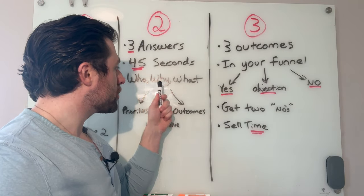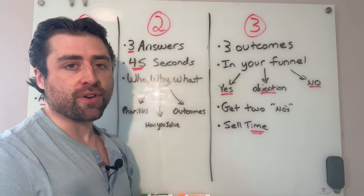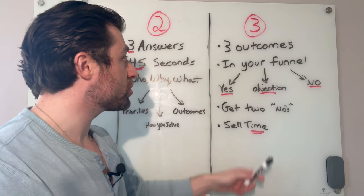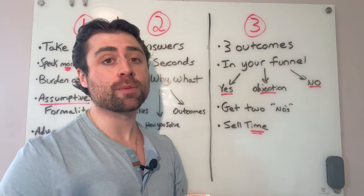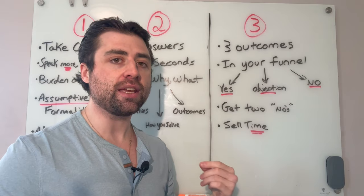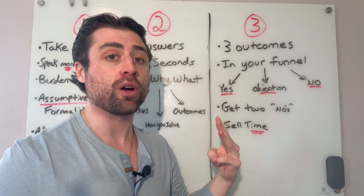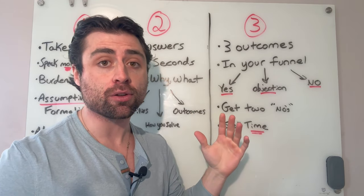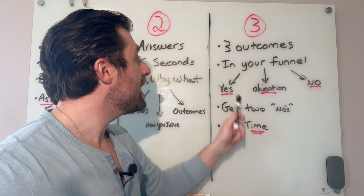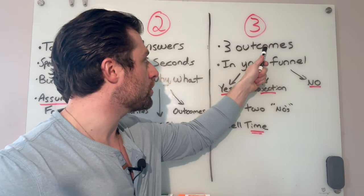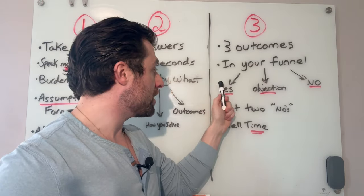So who you are, why you're calling and what you want within 45 seconds, you have now answered those three key questions. And there's only three possible outcomes. Once you physically get out who you are, why you're calling and what you want, and they don't hang up on you in the middle of that. If you physically get it out now, they're within your funnel and there's only three outcomes.